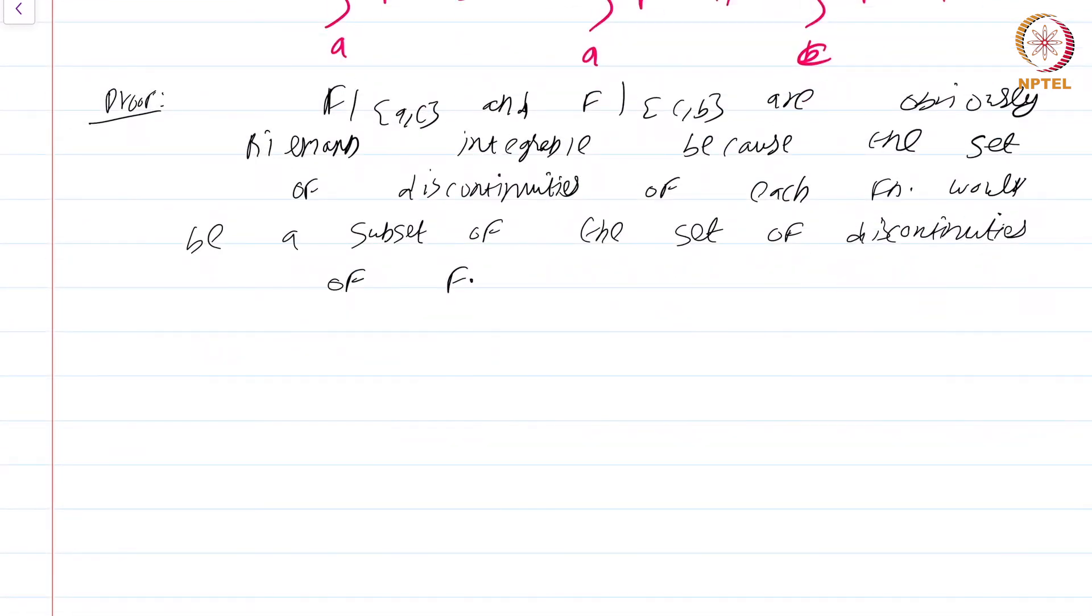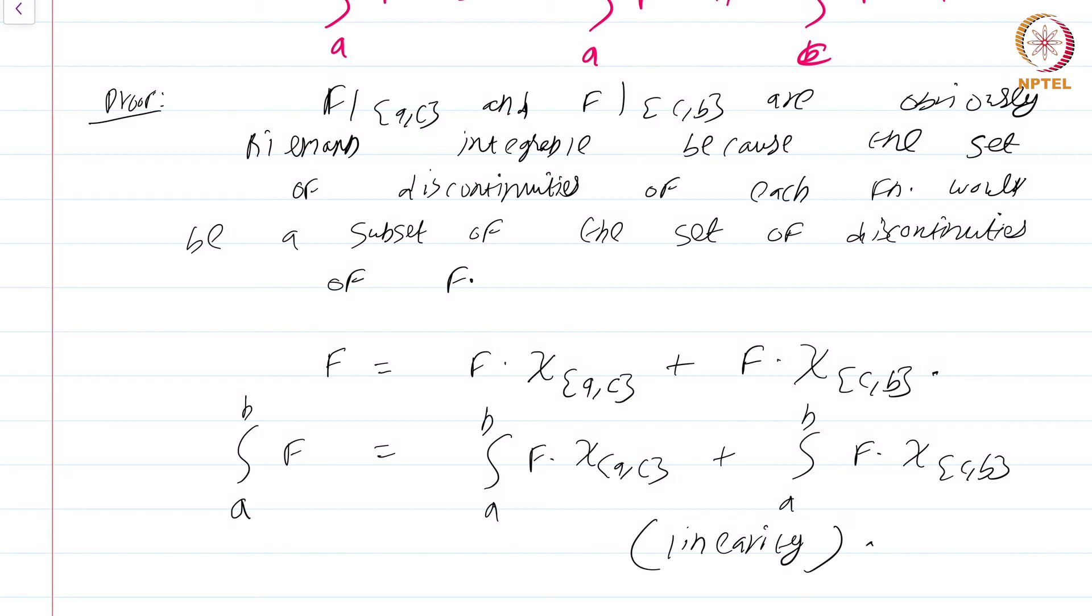Now observe that I can write f as f times chi_[a,c] plus f times chi_[c,b]. I can write the function f as a product of the function f and chi_[a,c] plus f times chi_[c,b]. Now with a little bit of thought it is now clear that integral from a to b of f is nothing but integral from a to b of f times chi_[a,c] plus integral from a to b of f times chi_[c,b]. This just follows from linearity which we have established in an earlier module.